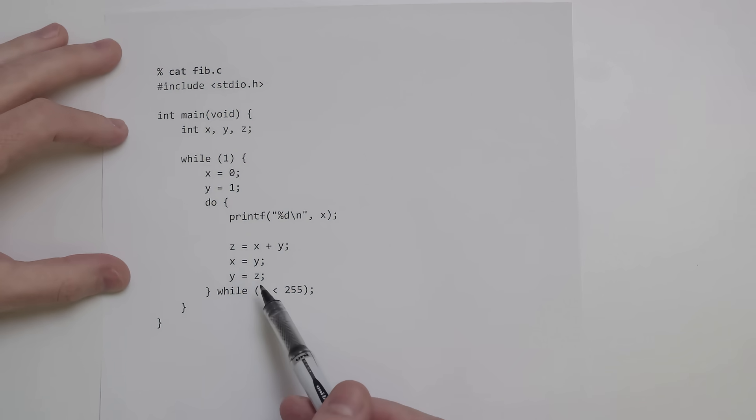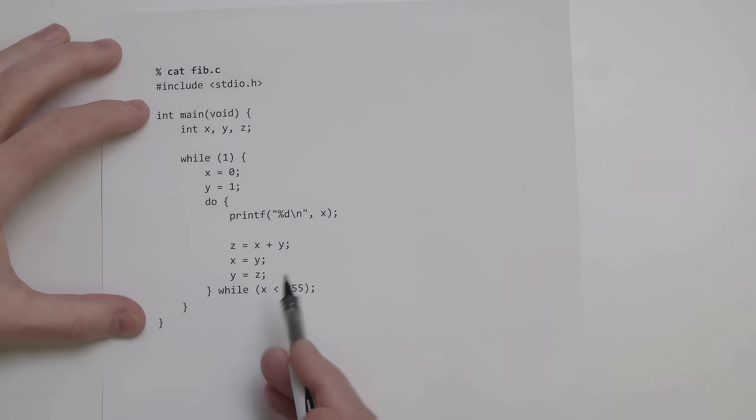I have a program here that prints out Fibonacci numbers, and I want to walk through how we get this program compiled to machine code and running on the computer.